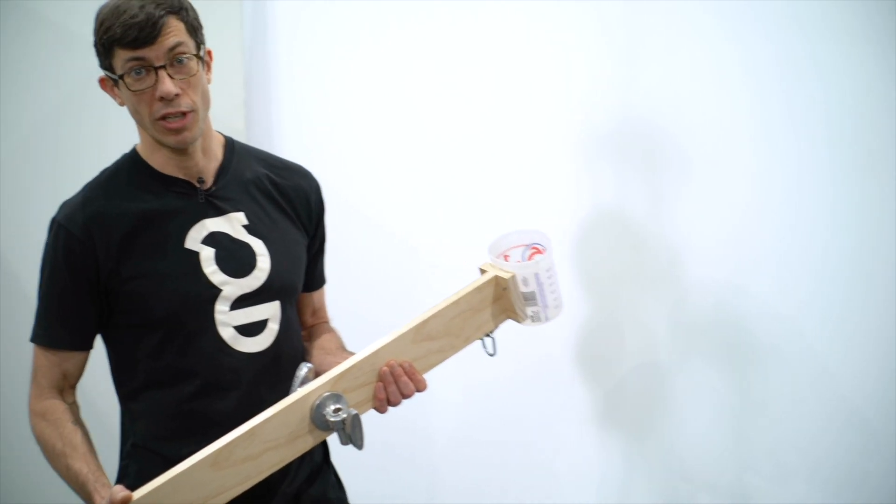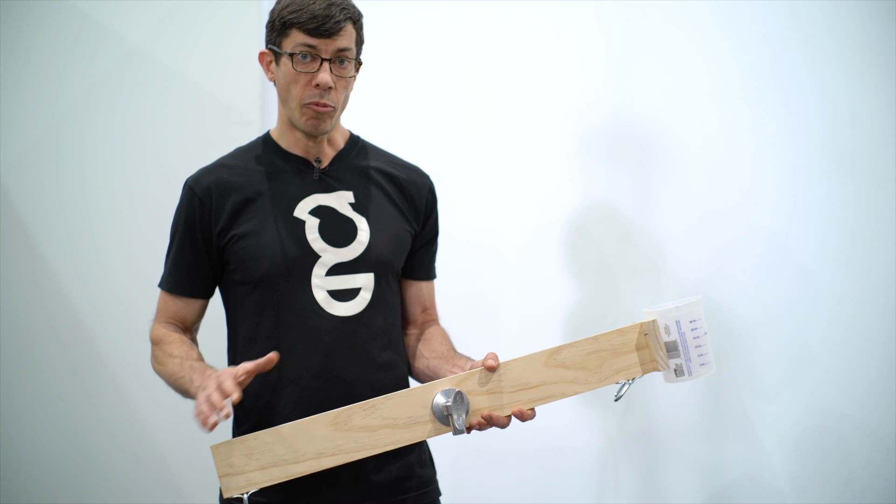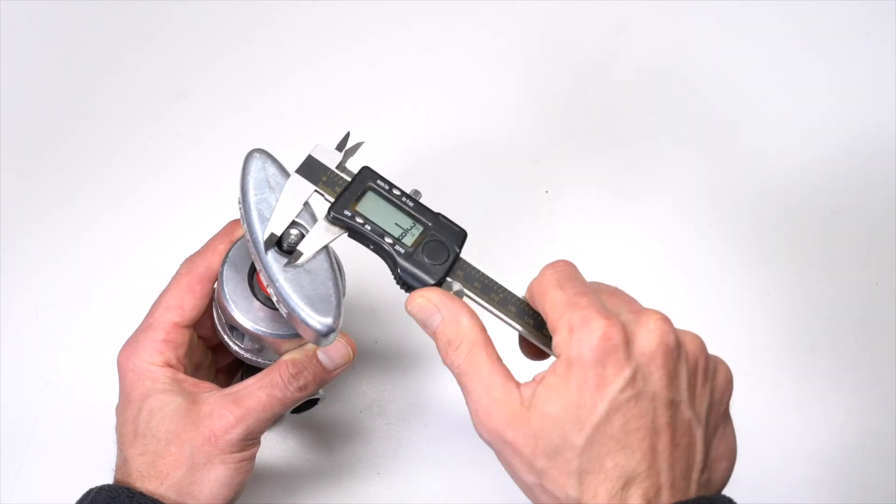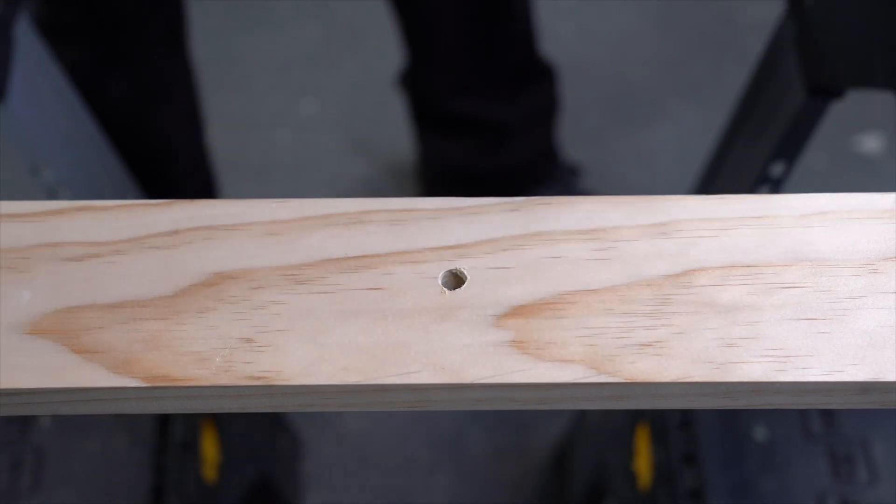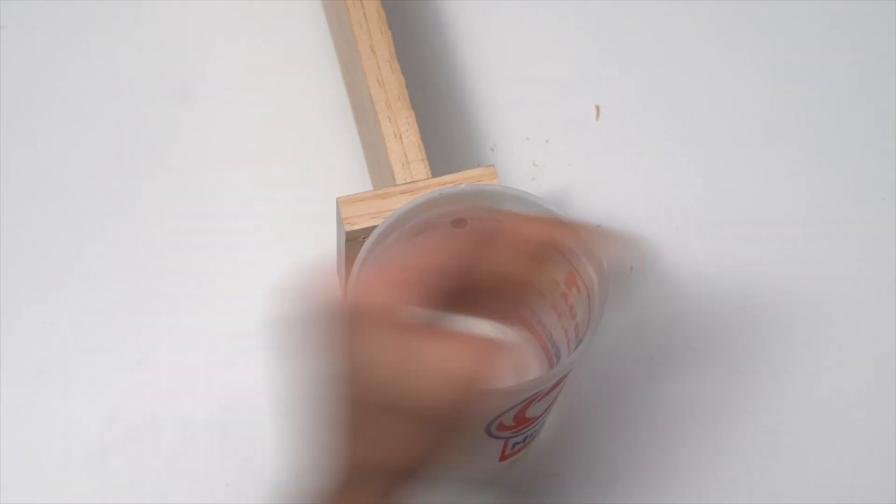So here's what our catapult arm is going to look like. It's very basic. I'm working with a c-stand knuckle. To make it, you'll need a piece of wood, a 3/8 drill bit, some screws, a bucket, and then some attachment points.